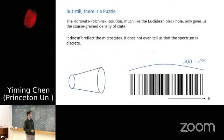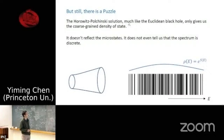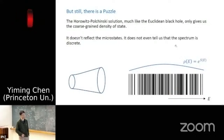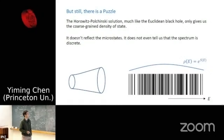However, there remains a puzzle alluded to at the beginning. The Horowitz-Polchinski solution, much like the Euclidean black hole, only gives us the coarse-grained density of states. It gives a smooth density of states and doesn't reflect that the underlying string gas spectrum is discrete. The question is what else is needed to get a discrete spectrum, and this will be the focus of the next part of the talk.